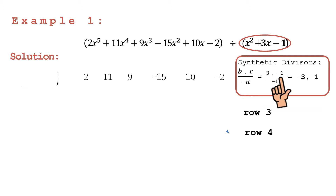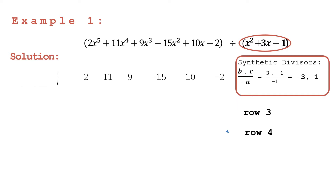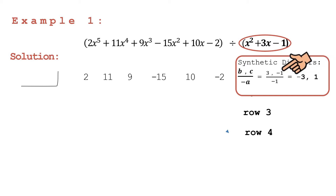We have a equal to 1, b equal to 3, and c equal to negative 1. Take note that the negative sign in our denominator is a constant, so you just carry that whether the value of a is positive or negative. Let's simplify: 3 divided by negative 1 is equal to negative 3, and negative 1 divided by negative 1 is equal to positive 1.